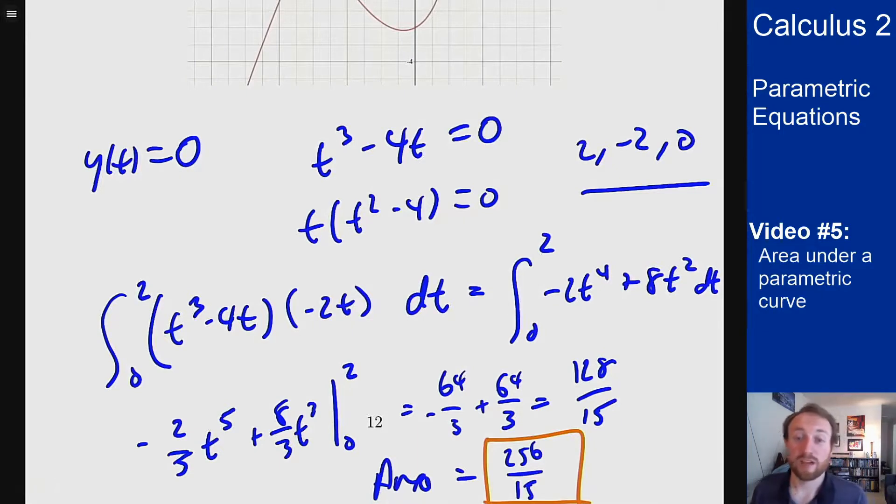And notice in this case my x was actually always decreasing on my domain and that worked out fine as well. The issue is I don't want to double back, so as long as x is either always increasing or always decreasing, this will work to give me the area under this curve. So the point here is we can do pretty much anything we want to do with calculus for these parametric curves.